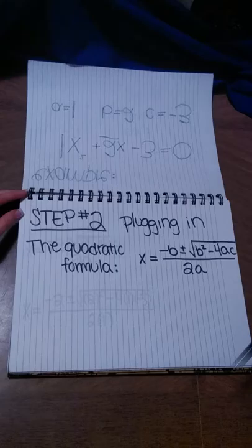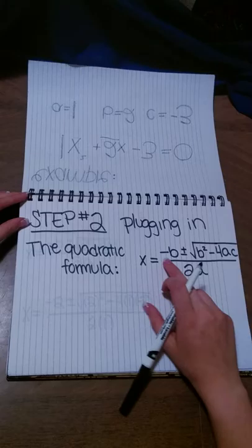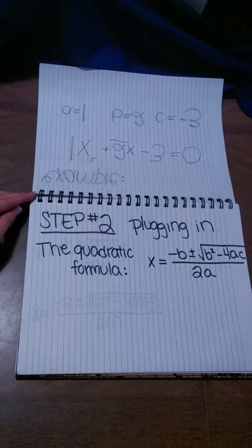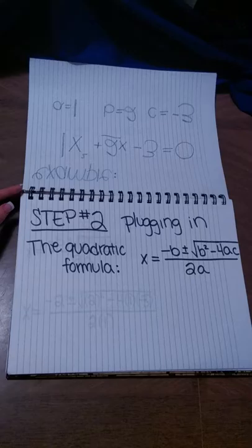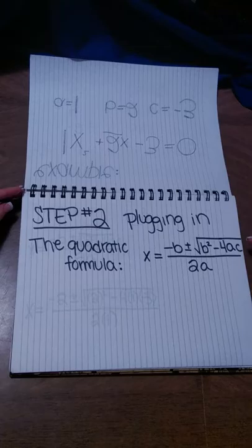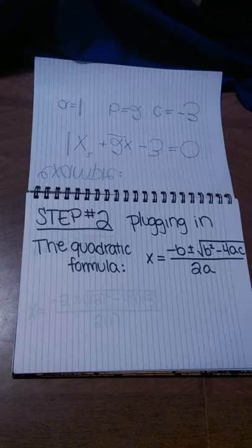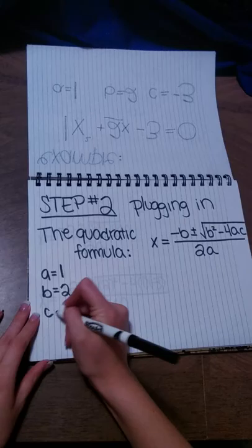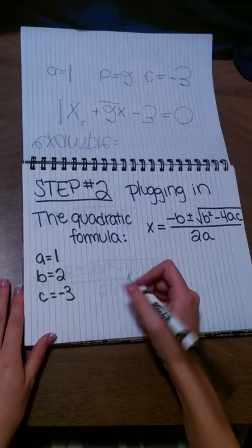The next step is plugging in these numbers. Here I have the quadratic formula: x equals negative b plus or minus the square root of b squared minus 4ac, all over 2a. I'd encourage you to memorize the quadratic formula — a lot of people don't, but it actually comes in handy. I was forced to memorize it, and you'd be surprised how much it comes up. So our a equals 1, our b equals 2, and our c is negative 3.